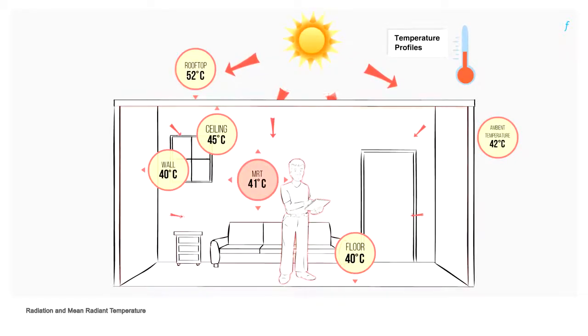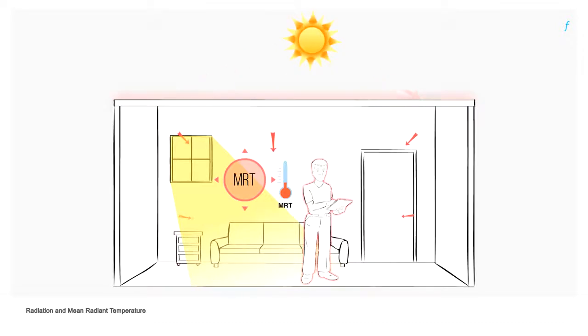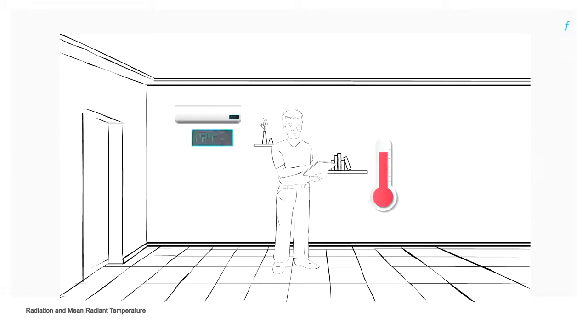Mean radiant temperature quantifies the influence of surface temperatures on human comfort. For example, a hot roof, windows exposed to direct sunlight, etc. will increase the mean radiant temperature. The higher the mean radiant temperature, the cooler the air required to achieve thermal comfort.